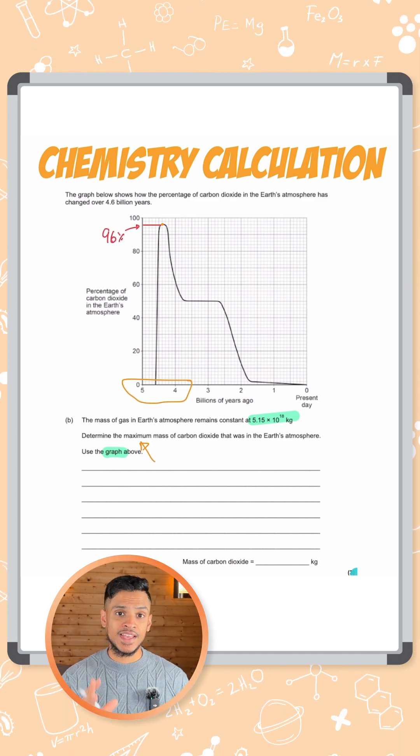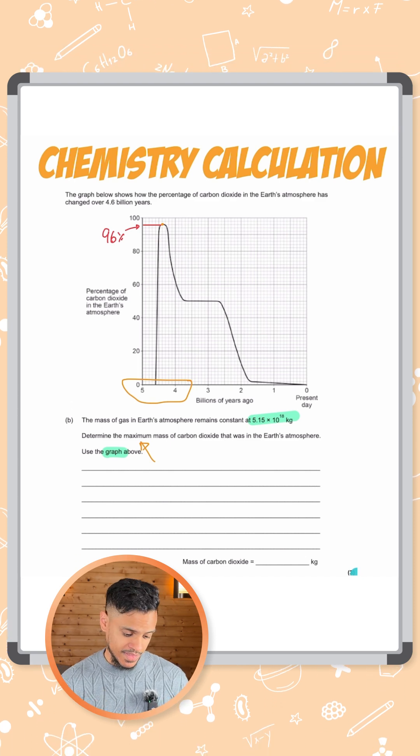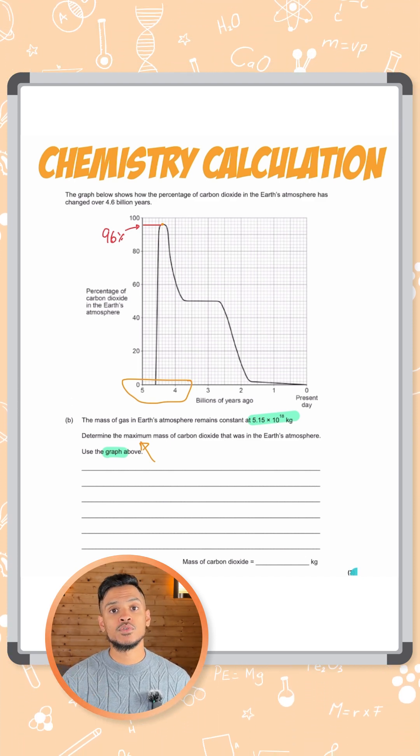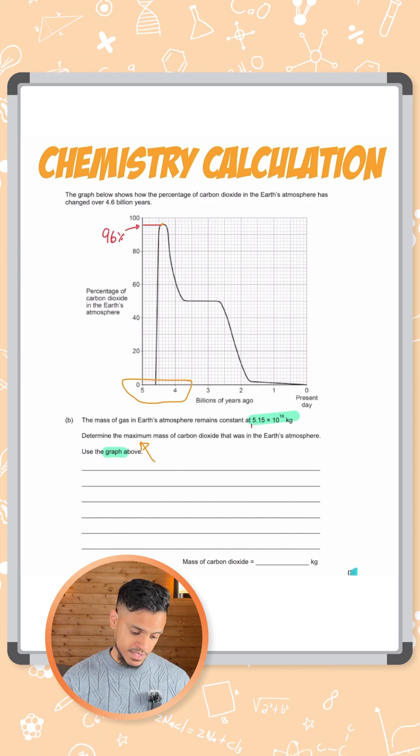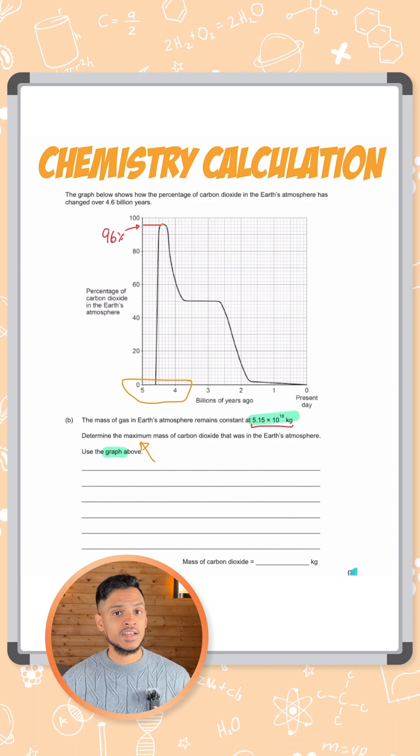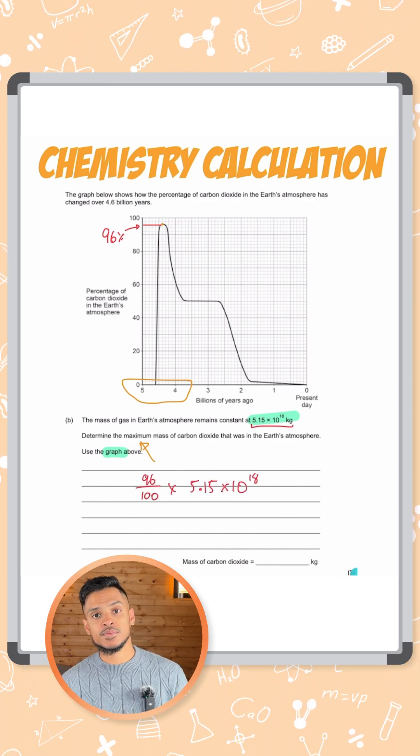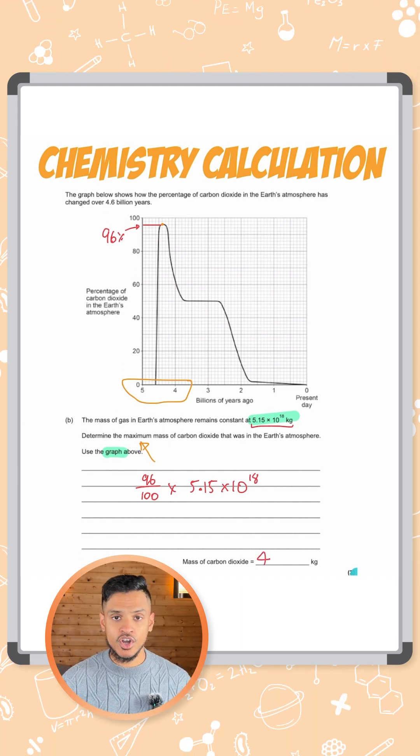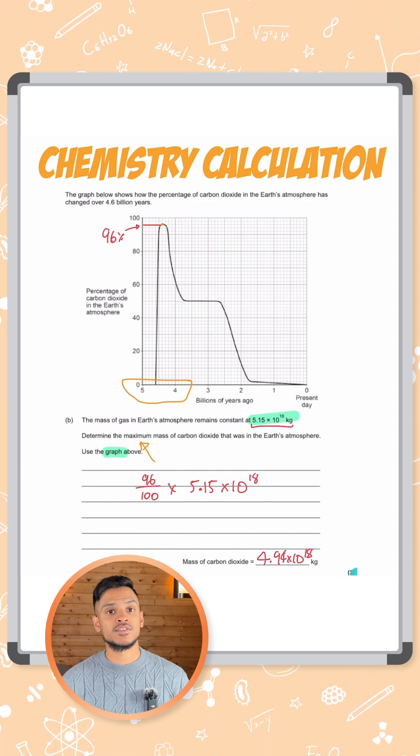So 96 percent of gases in the atmosphere back then was carbon dioxide. If we know the mass of the total gases in the atmosphere is this value here, all we need to do is find 96 percent of that. So 96 percent of 5.15 times 10 to the 18, which gives you an answer of 4.94 times 10 to the 18 kilograms.